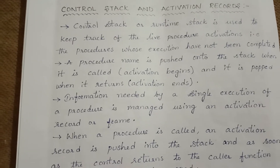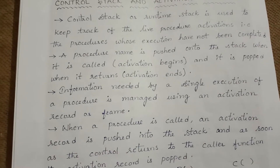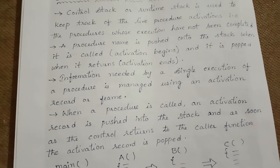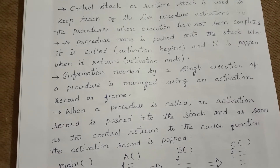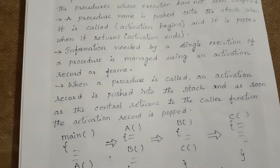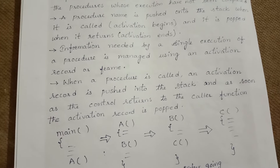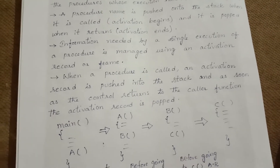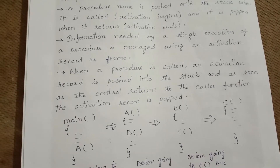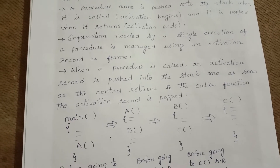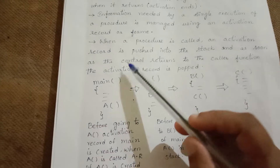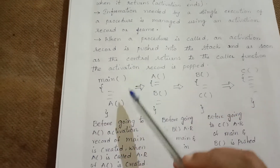Information needed by a single execution of a procedure is managed using an activation record or frame. When a procedure is called, an activation record is pushed into the stack, and as soon as the control returns to the caller function, the activation record is popped.